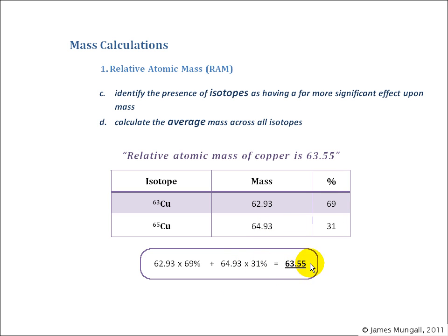which then gives lo and behold our 63.55. So we have worked out a weighted average across all isotopes.